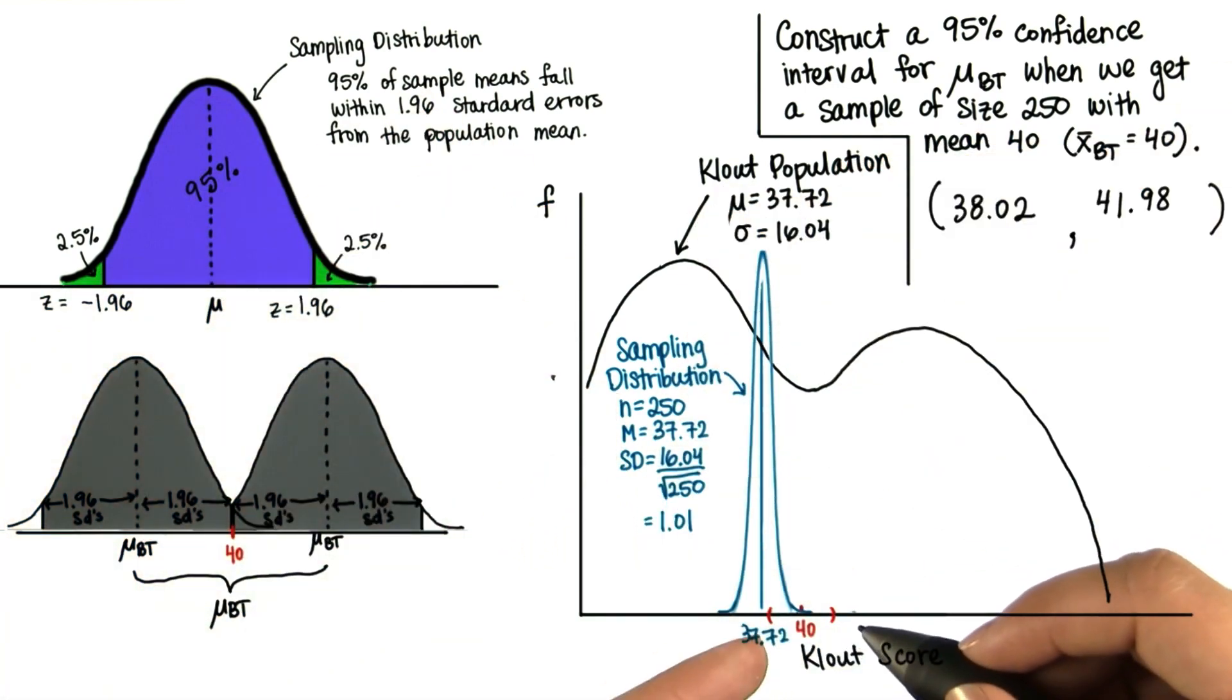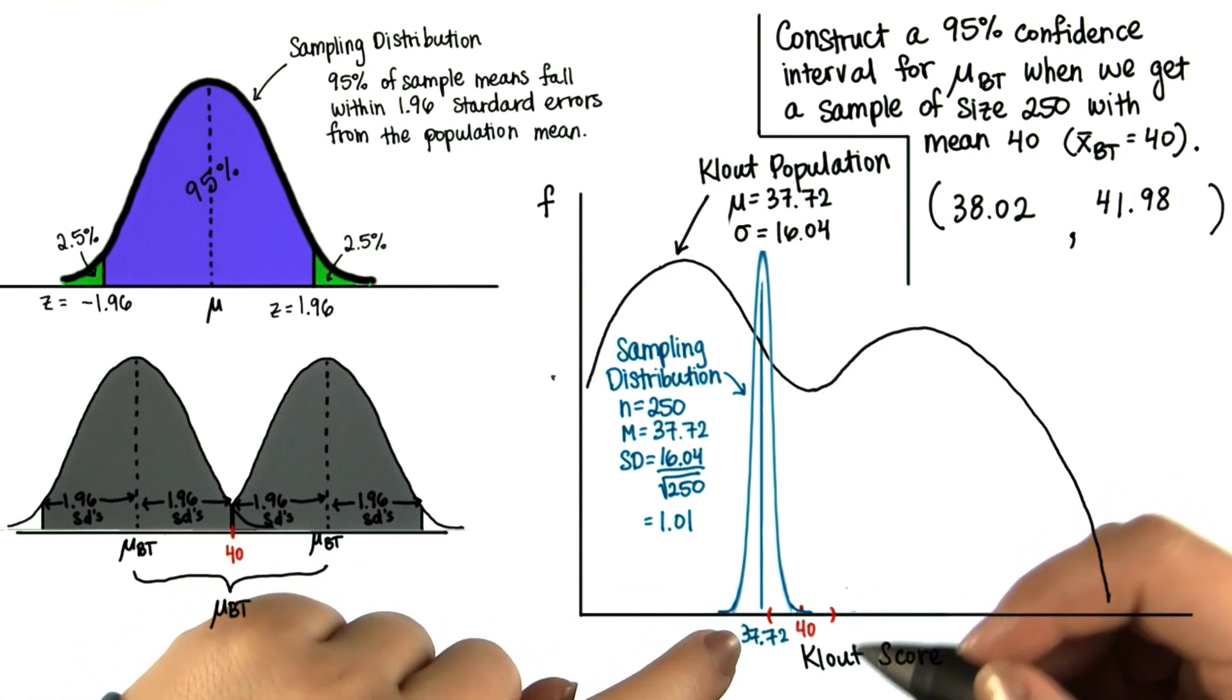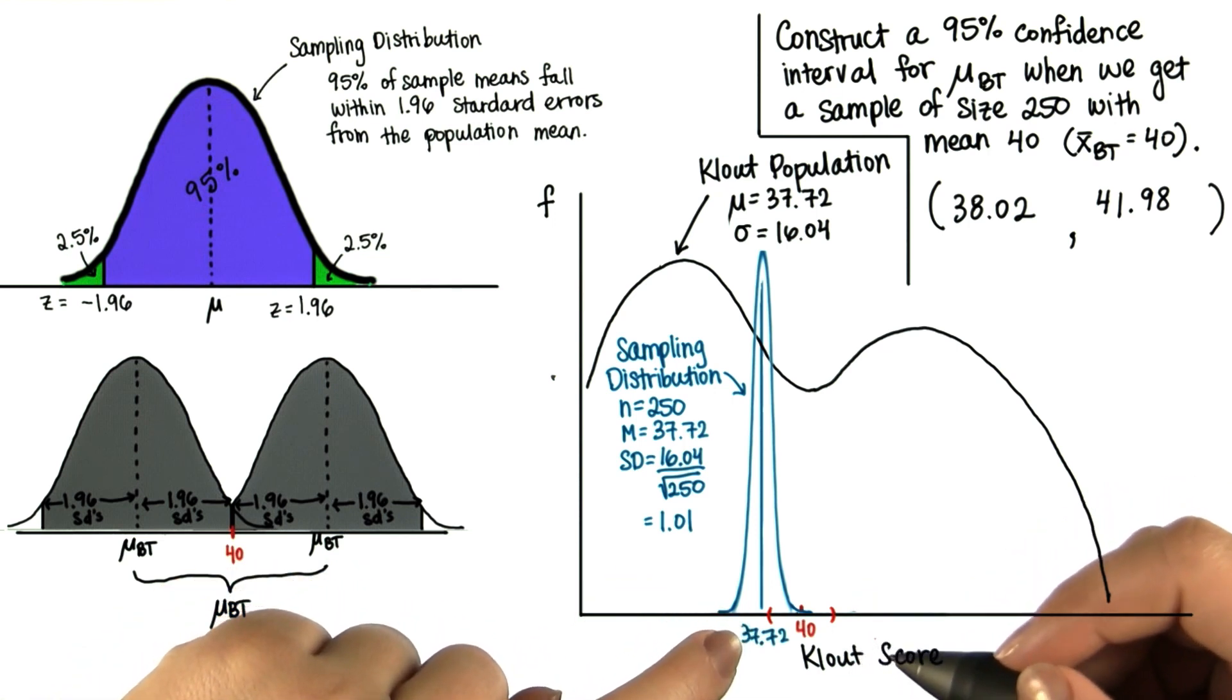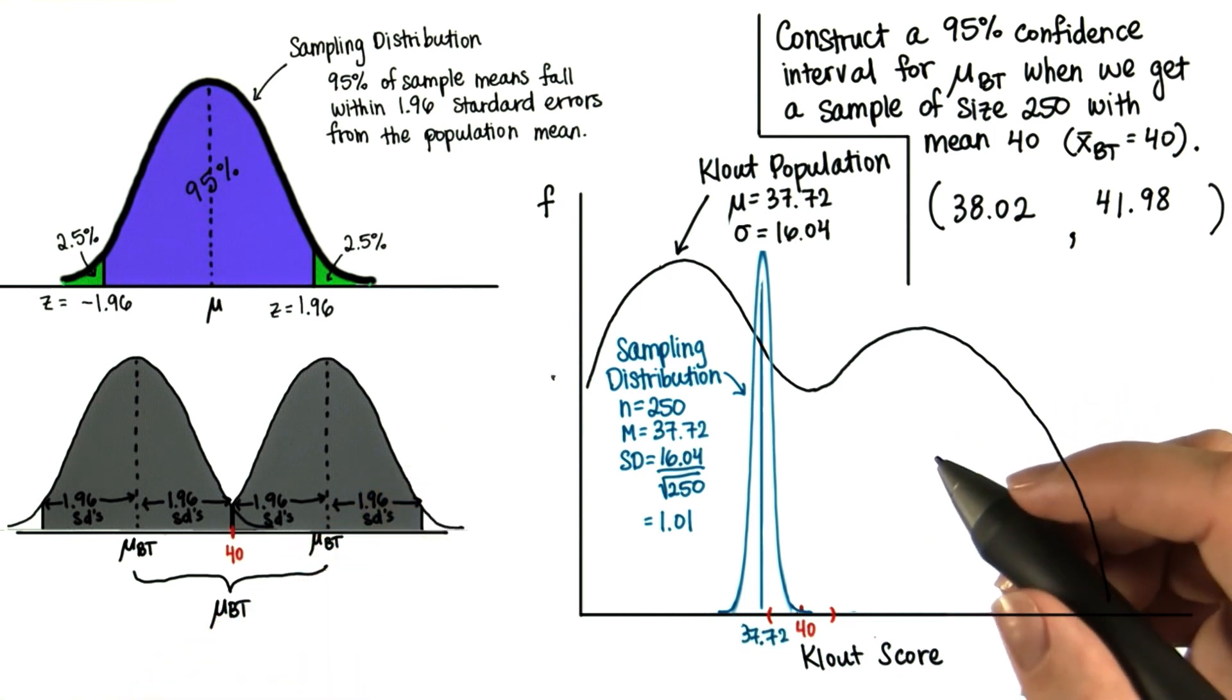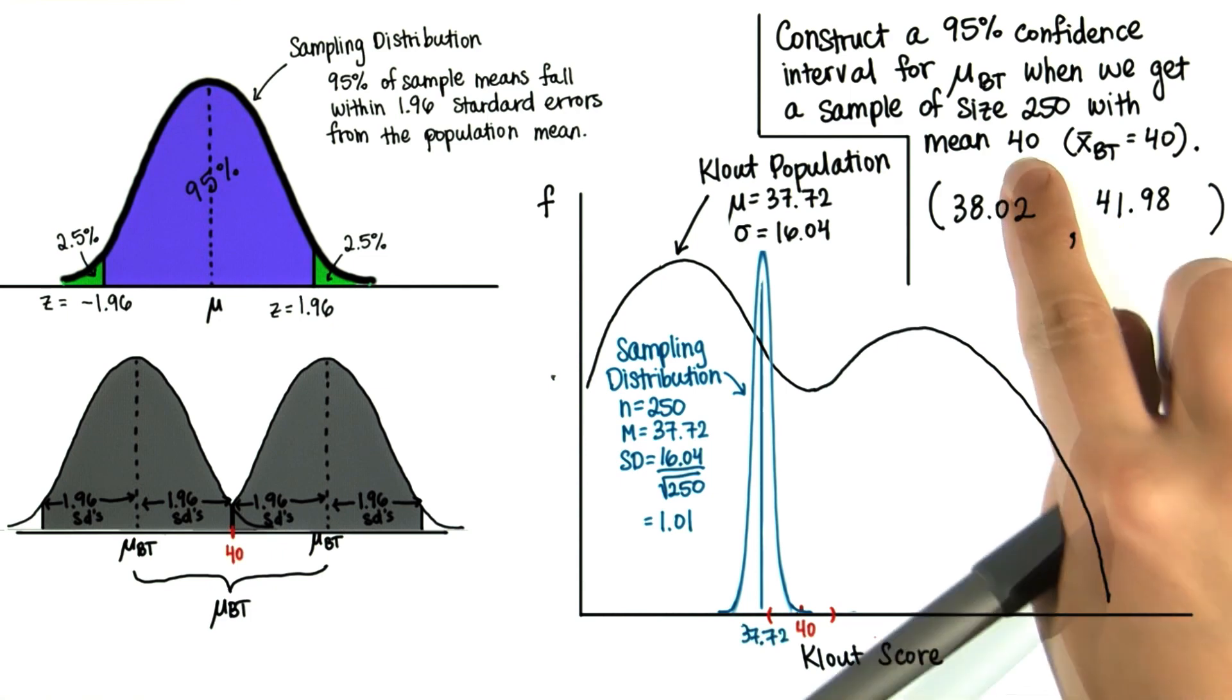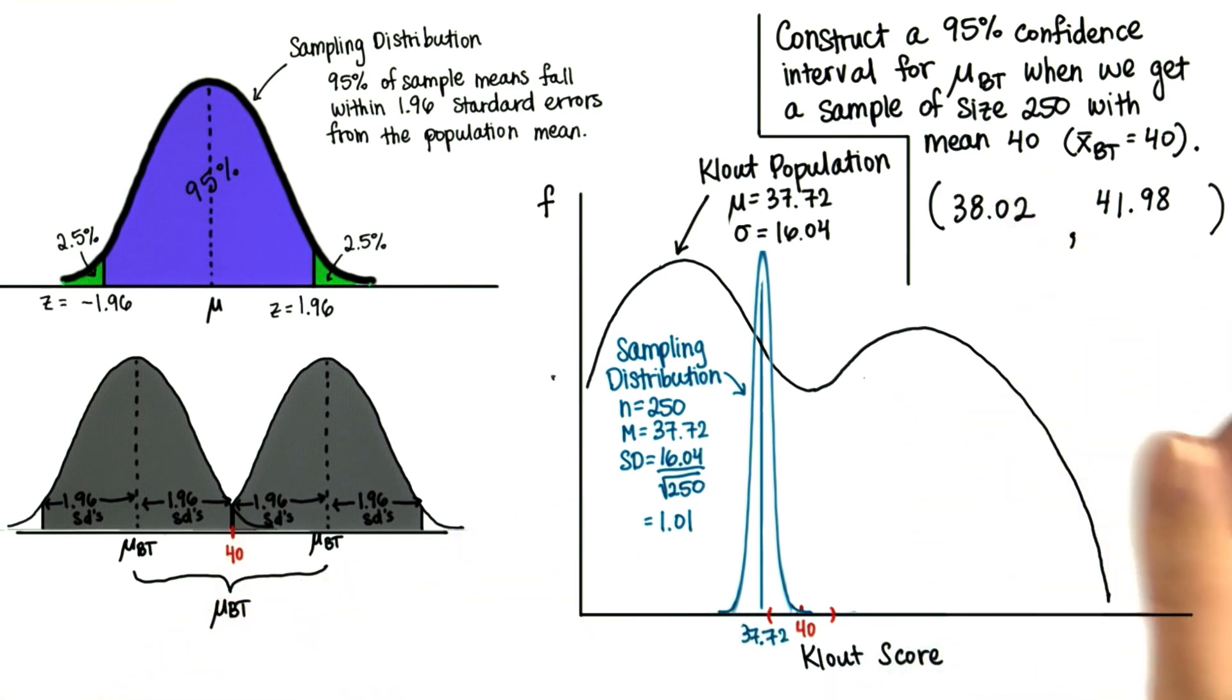Now notice that this confidence interval doesn't even contain the original population mean, 37.72. Therefore, it's very unlikely that a random sample of size 250 with a mean of 40 could have been selected by chance. This is evidence for a treatment effect.